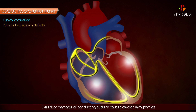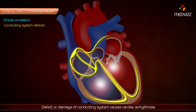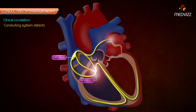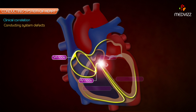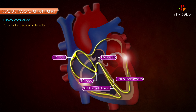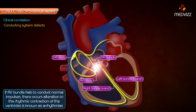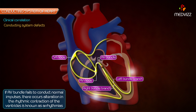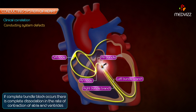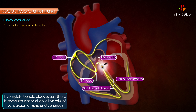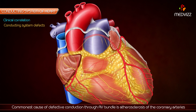Regarding clinical correlation and conducting system defects: defect or damage of the conducting system causes cardiac arrhythmias. The SA node is the spontaneous source of generation of cardiac impulses, and the AV node picks up these impulses from the atria and sends them to the ventricles through the AV bundle — the only means through which impulses can spread from atria to ventricles. If the AV bundle fails to conduct normal impulses, there is alteration in the rhythmic contraction of the ventricle, known as arrhythmia. If complete bundle block occurs, there is complete dissociation in the rate of contraction of atria and ventricles.